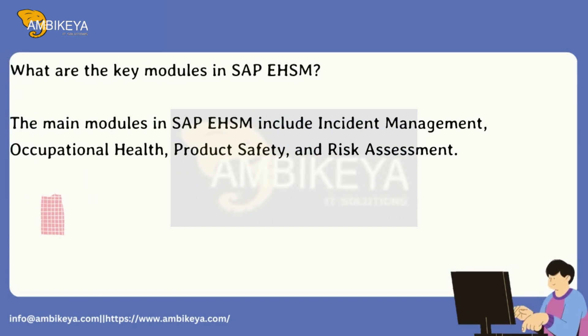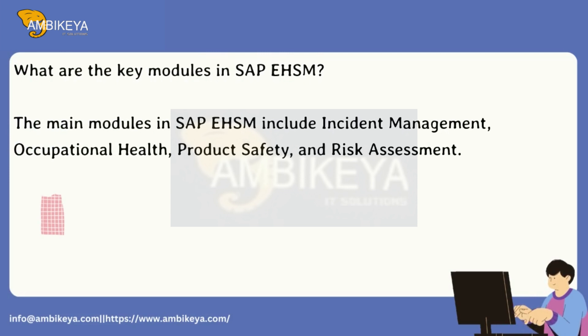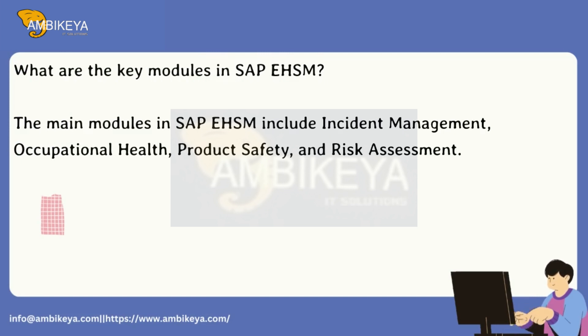What are the key modules in SAP EHSM? The main modules in SAP EHSM include Incident Management, Occupational Health, Product Safety, and Risk Assessment.